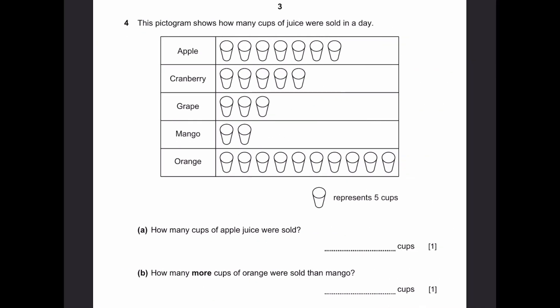Question 4. This pictogram shows how many cups of juice were sold in a day. So one pictorial cup represents five actual cups. A. How many cups of apple juice were sold? That's 1, 3, 4, 5, 6, 7, multiplied by 5. That's 35 cups. B. How many more cups of orange were sold than mango? Orange was 10 cups, which is 50. Mango is 2 cups, which is 10. So 50 minus 10, which is 40 cups more.